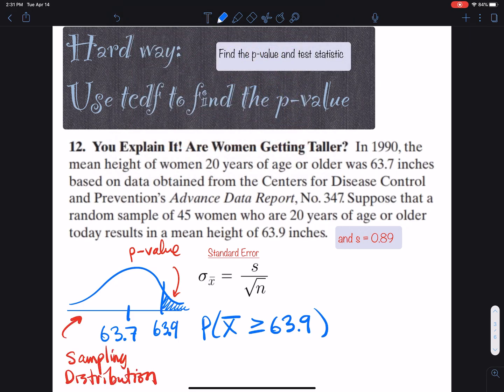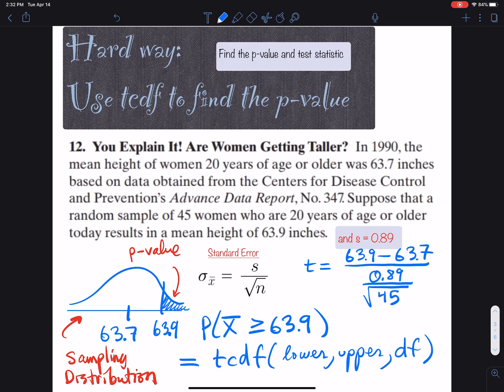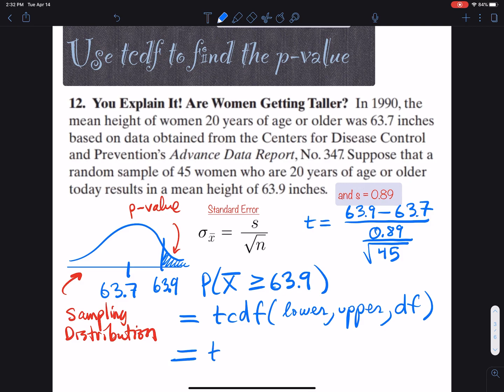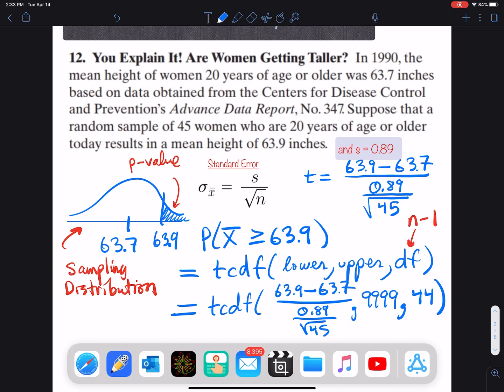We need to convert 63.9 to a t-score: (63.9 - 63.7) divided by the standard error, which is 0.89/√45. We do this because TCDF only allows three parameters: lower, upper, and degrees of freedom. It doesn't allow you to plug in the mean and standard error. So this becomes TCDF((63.9 - 63.7)/(0.89/√45), 9999, 44). We use 9999 because the shaded region goes infinitely to the right, and degrees of freedom is n - 1, which is 44.